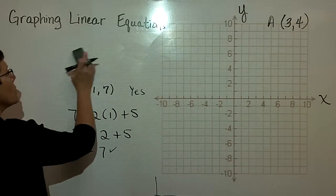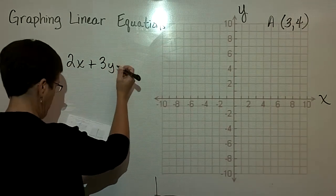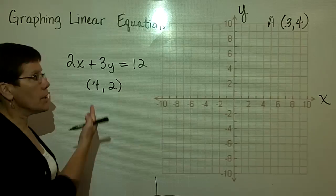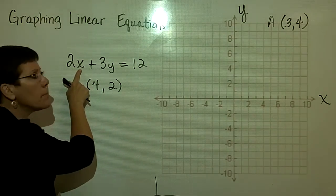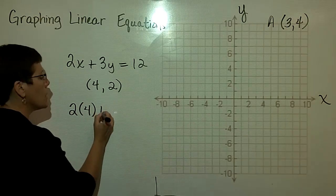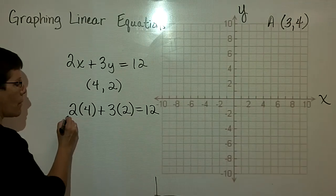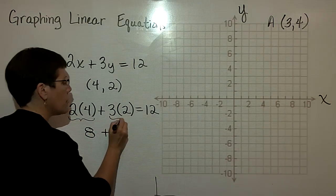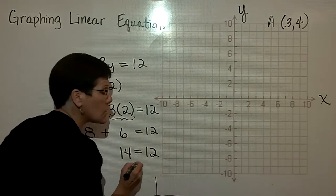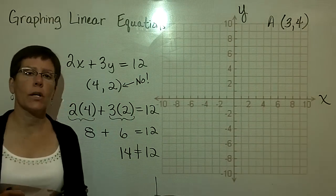Here's another linear equation: 2x + 3y = 12. Is the ordered pair (4, 2) a solution? Substituting x = 4 and y = 2: 2 times 4 plus 3 times 2 equals 8 plus 6, which equals 14. That gives us 14 = 12, which is not true. So no, (4, 2) is not a solution to this particular linear equation.